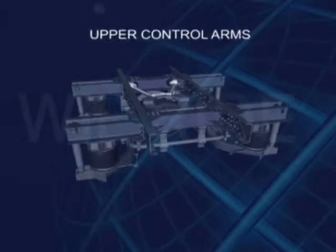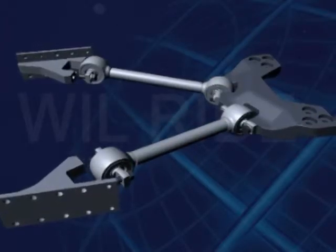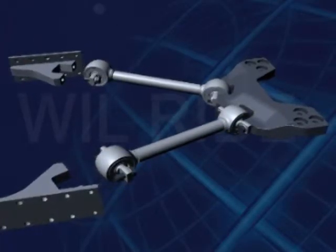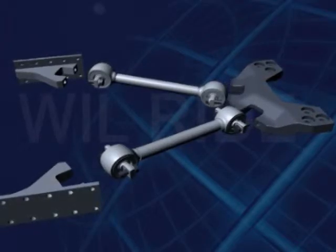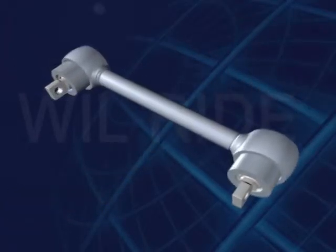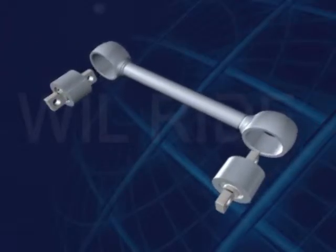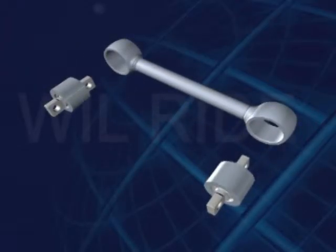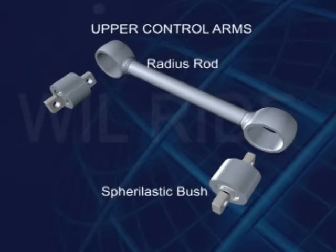Two top links, also called as upper control arms. Controls the movement of axle with respect to the chassis. Upper control arms may consist of radius rod and heavy duty spherical elastic bush assembly.